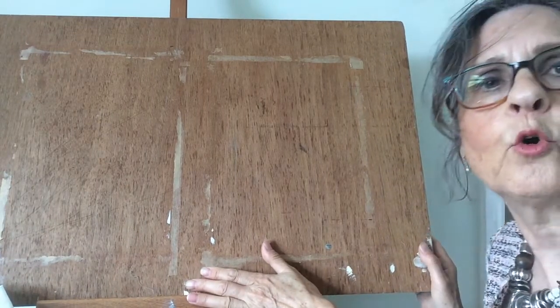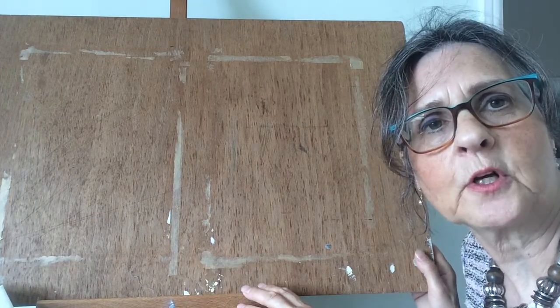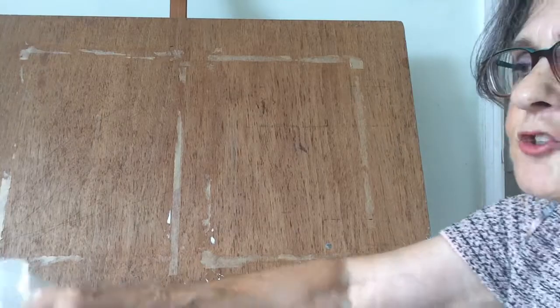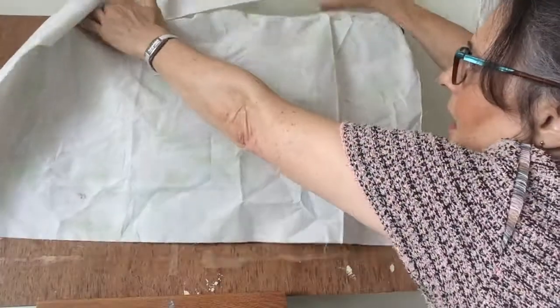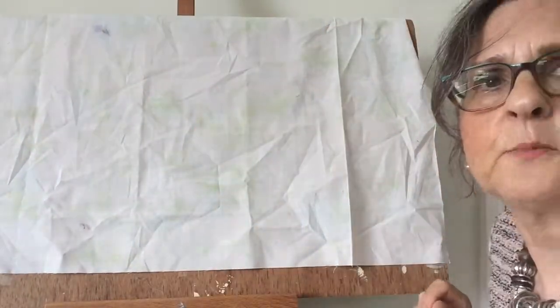So here I have a piece of board which is on an easel. This is a tabletop one but I also work on a big easel and I literally take a piece of fabric and drape it over the top and I'm ready to begin.